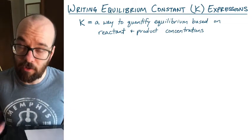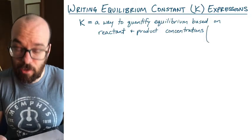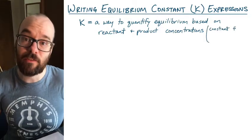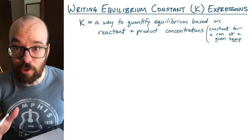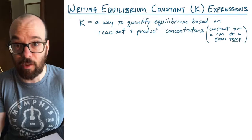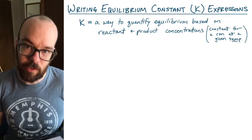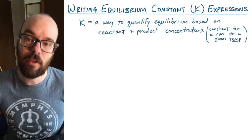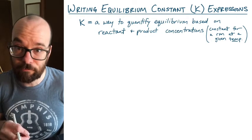The equilibrium constant is also a constant for a given reaction, but only at a given temperature. If you change the temperature at which a reaction is taking place, then that K-value is going to change. So whenever we look at a K-value, we're looking at a given temperature.